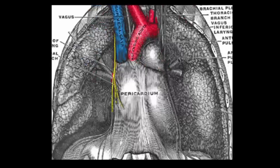Branches off to the pericardium, running down the pericardium on the right-hand side before giving off branches to the diaphragm, providing motor innervation to the diaphragm muscle, but also sensory innervation to the diaphragmatic peritoneum on the other side of the diaphragm.